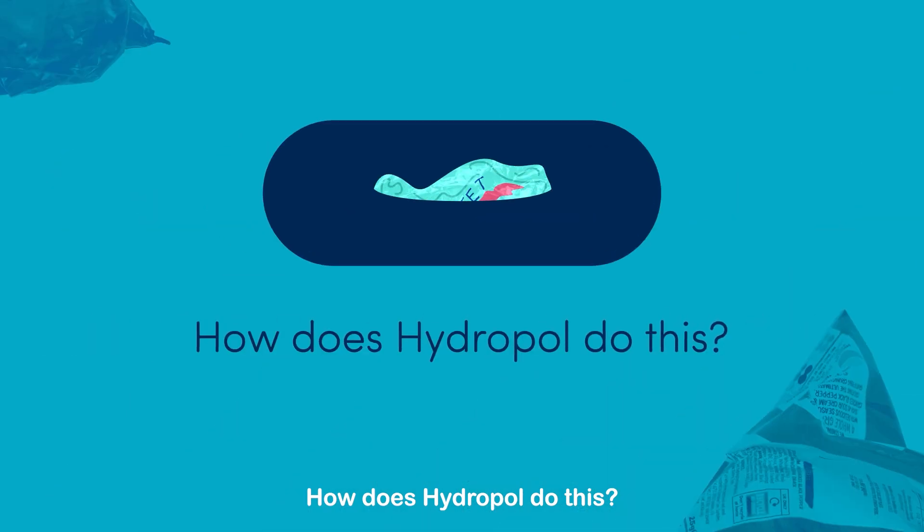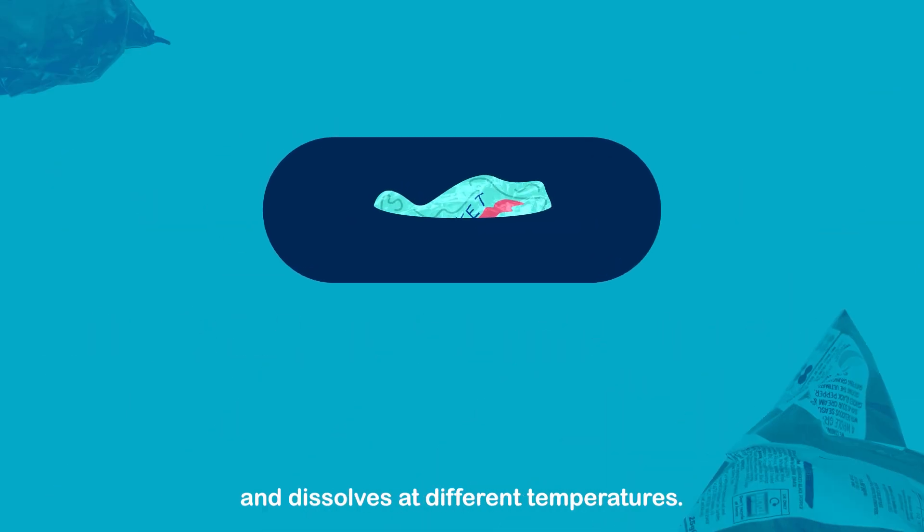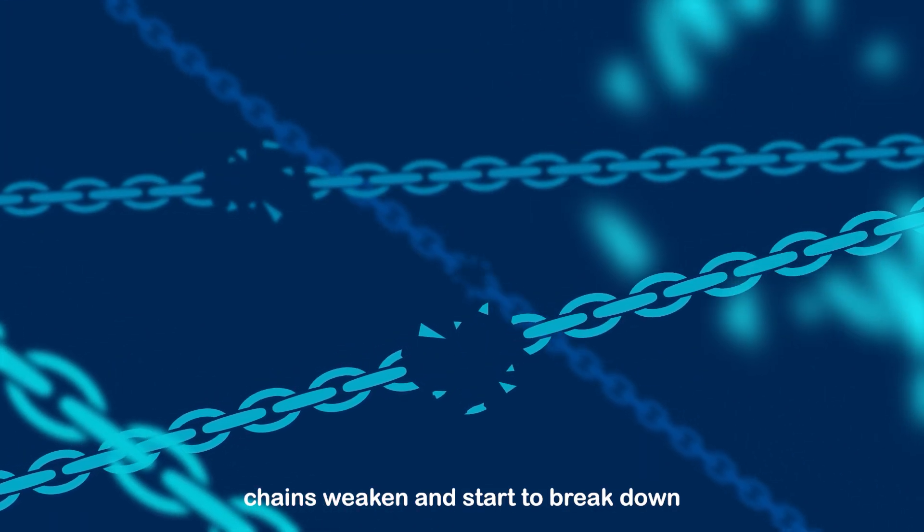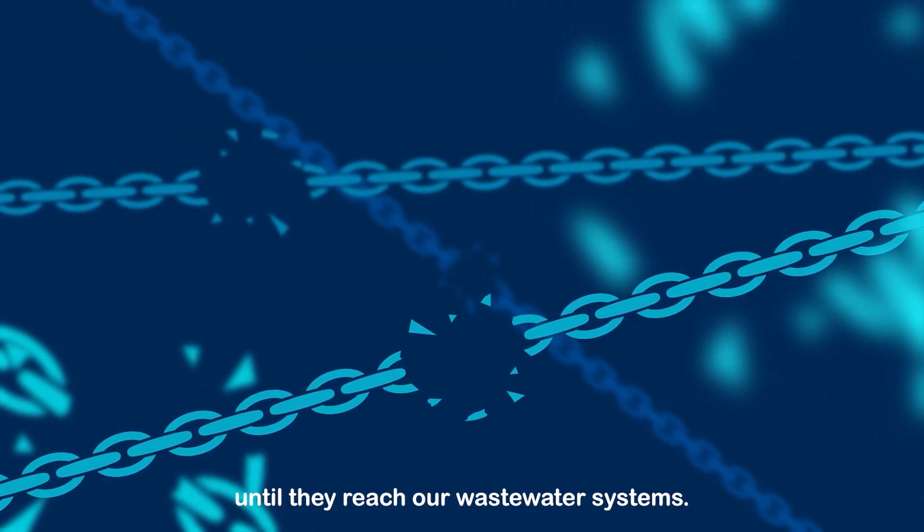How does Hydropol do this? Hydropol loves water and dissolves at different temperatures. During this process, polymer chains weaken and start to break down until they reach our wastewater systems.